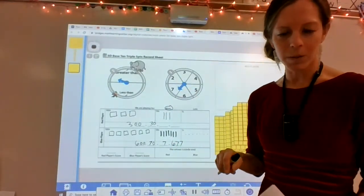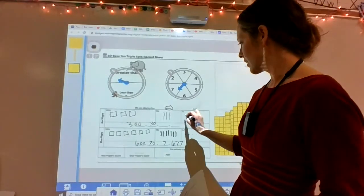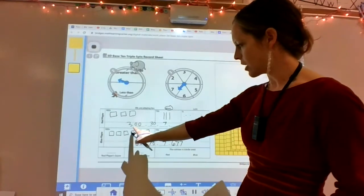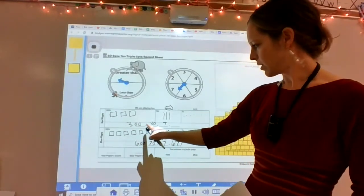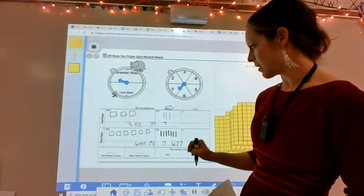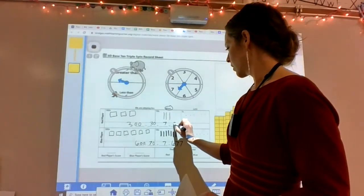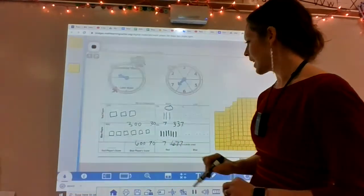Spin one more time. This is why it's called triple spin. It's three spins. Seven. One, two, three, four, five, six, seven. Here's my equation. Three hundred plus thirty plus seven. Smoosh it together equals three hundred thirty seven.